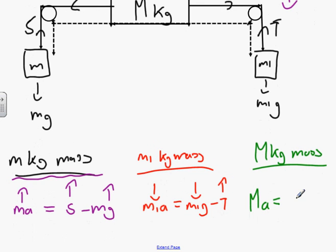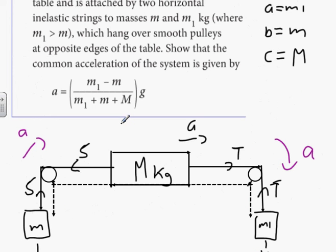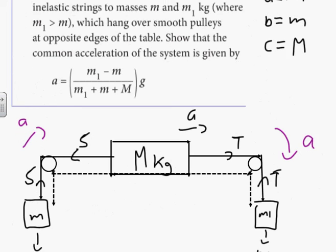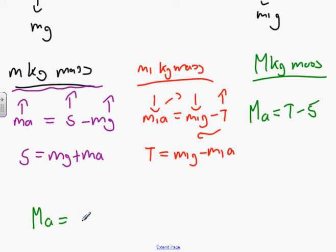Now look at the combination of both, no tensions whatsoever represented here. So we've got to get rid of all our tensions. We're going to do what we usually do. I'm going to use the purple equation, isolate s, s equals mg plus ma. I'm going to use the red equation and isolate t. T equals m1g minus m1a. Using both of these equations, I'm now going to put them into the green equation, which is Ma equals m1g minus m1a minus mg minus ma.